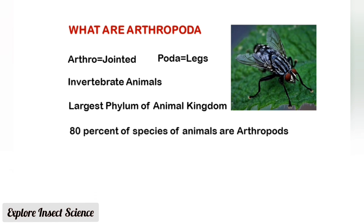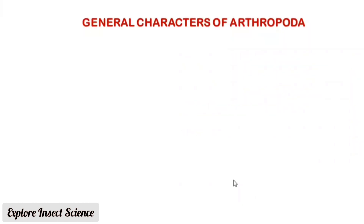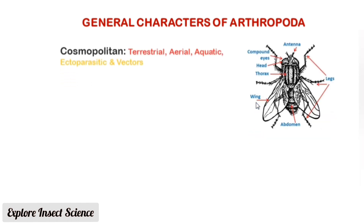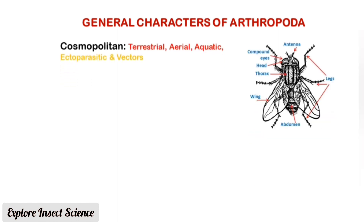Arthropoda is the largest phylum of the animal kingdom. Around 80% of all animal species found in the world are arthropods. They are cosmopolitan, meaning they are found everywhere — in terrestrial, aerial, and aquatic environments. Some are ectoparasitic and act as vectors of diseases.